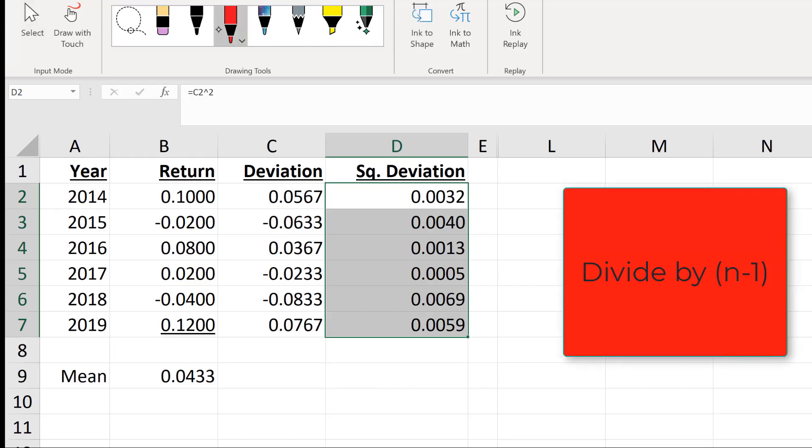Instead of dividing by n, we're going to divide by n minus one, which is five. We'll start by summing the squared deviations.